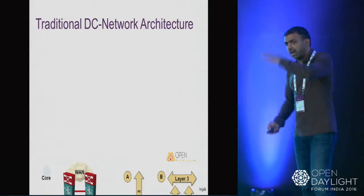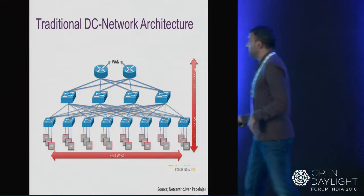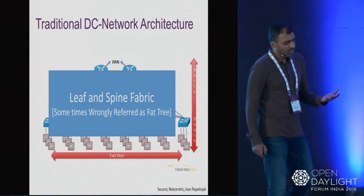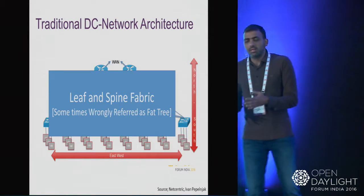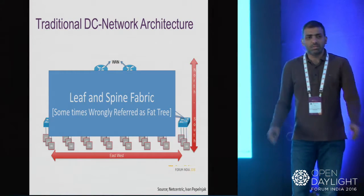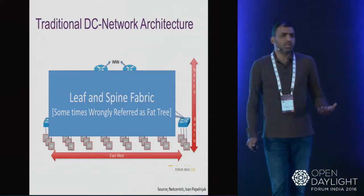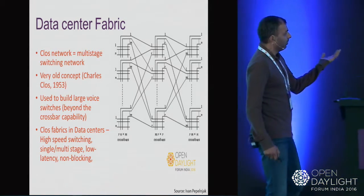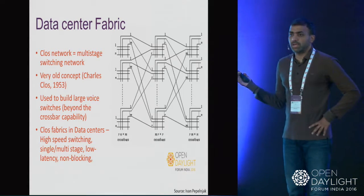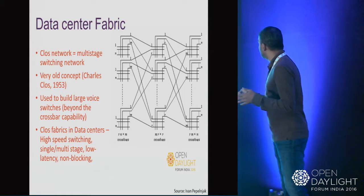The idea to overcome this was to flatten the network and bring in the leaf-and-spine fabric. There's some argument — a wiki article says you shouldn't call it a 'fat tree'; fat tree is different. But leaf-and-spine is the most common term used. The basic idea exists for more than 50-60 years: when people were building voice switches, they were using crossbars. A high maximum capacity crossbar couldn't support too many elements, so Charles Clos came up with the idea of breaking it into multiple elements.